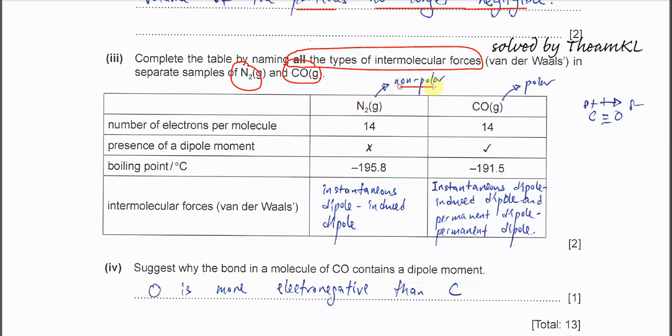First we need to know whether these molecules are polar or non-polar. Nitrogen, we know is non-polar molecules because zero net dipole. Therefore in nitrogen, it just has IDID only, instantaneous dipole-induced dipole. Only one Van der Waals force.